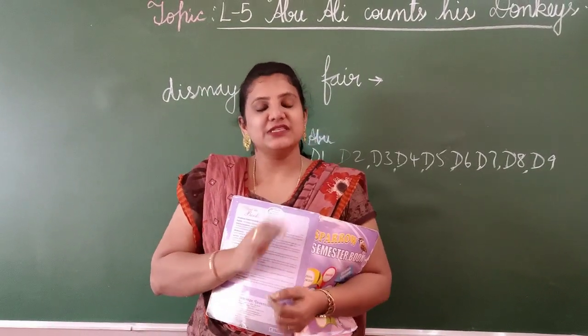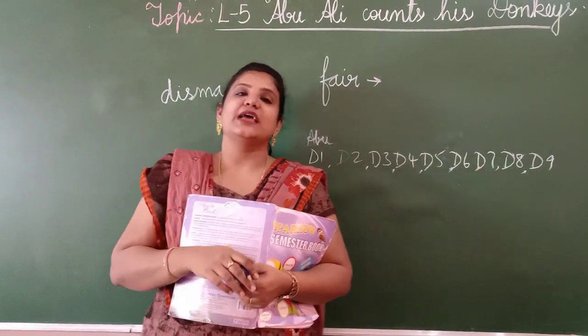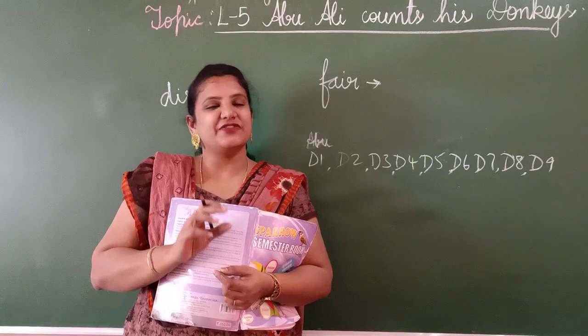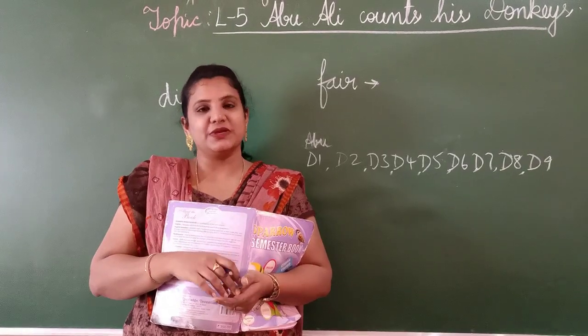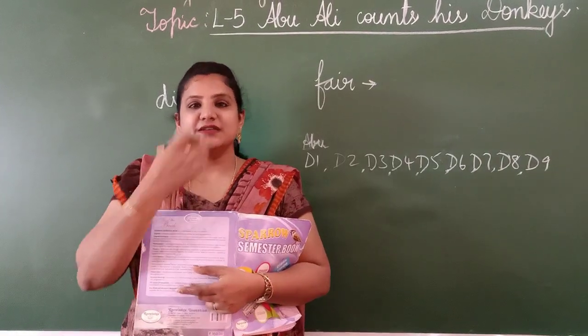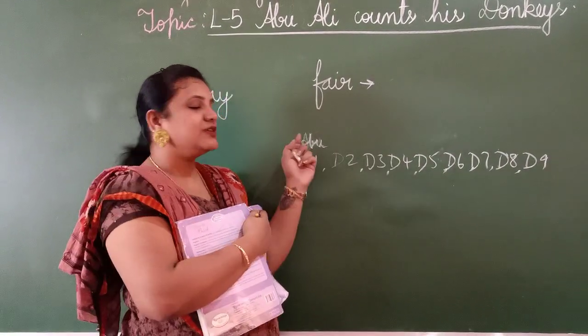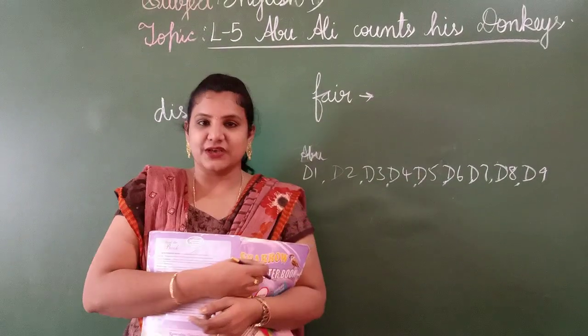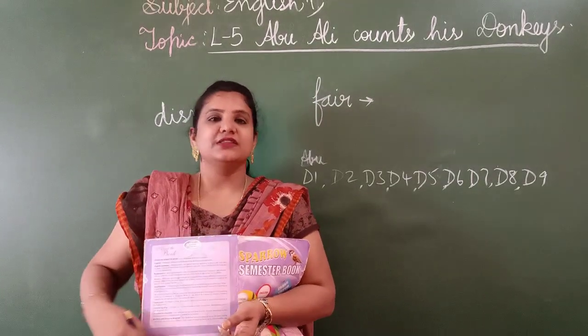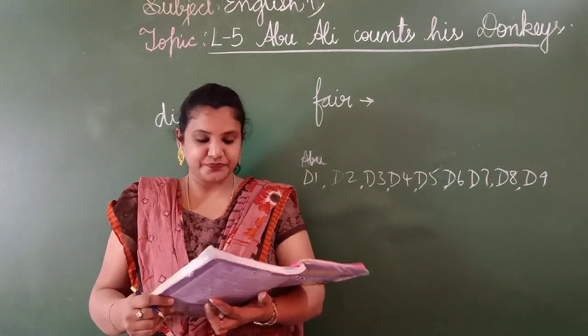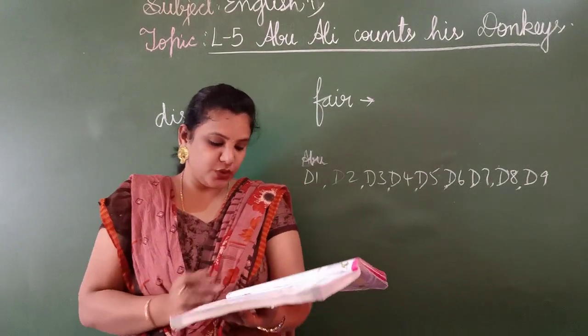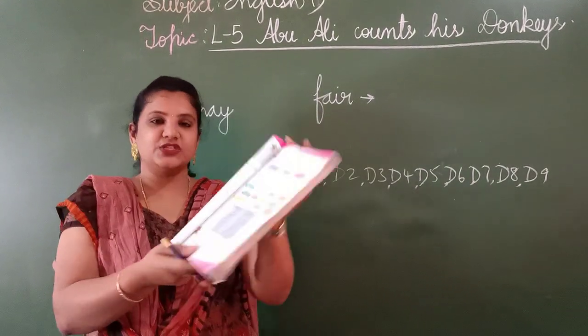This completes your chapter, children. This is a very short and sweet story — it is about how Abu Ali acted foolishly. Now all of you turn to page number 30.